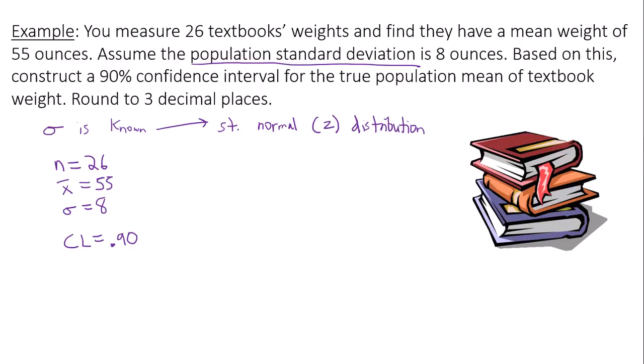So the true population mean for textbook weights is between a lower limit of 52.419 and an upper limit of 57.581. You can also write this in interval notation as well.